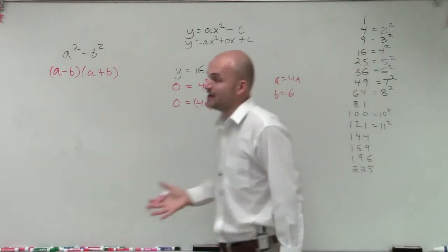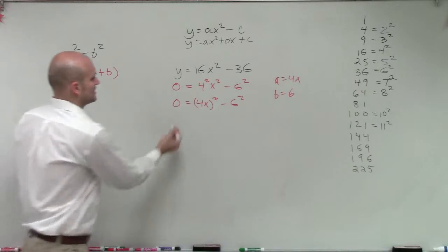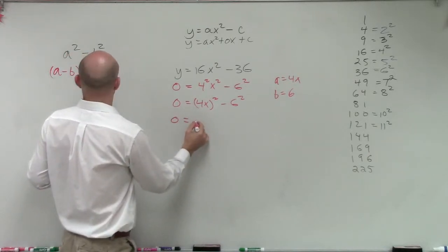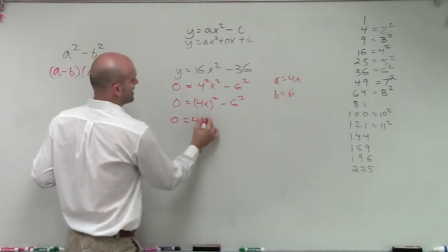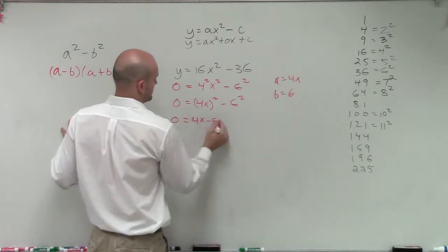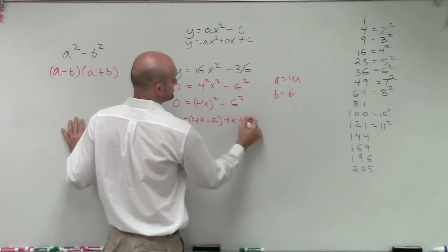So therefore, now that we have those two values, I can just apply them inside here. So I can say 0 equals 4x minus 6 times 4x plus 6.